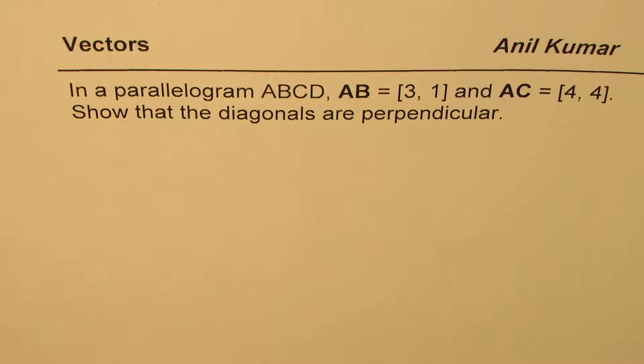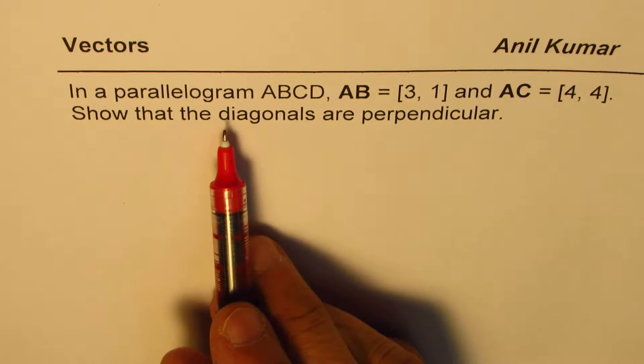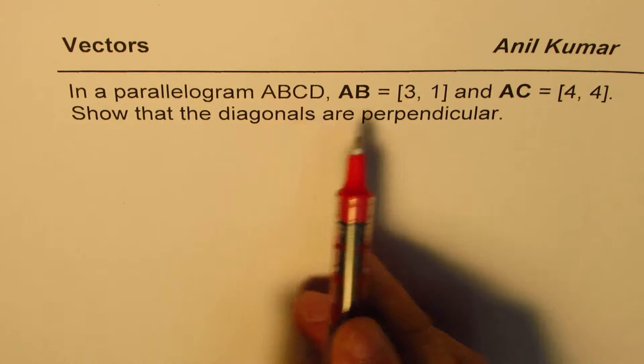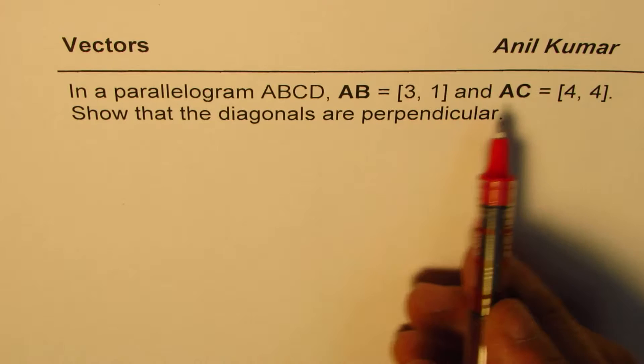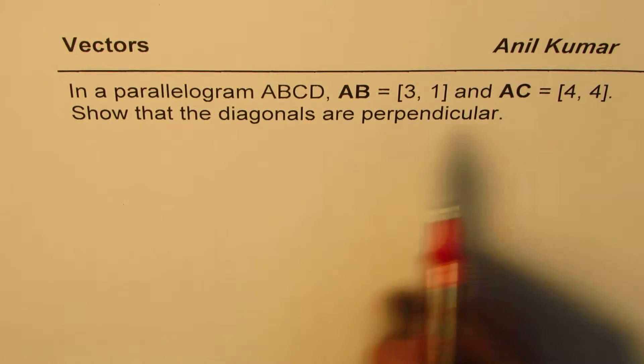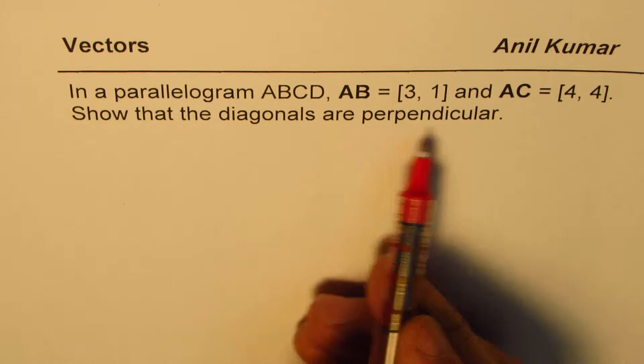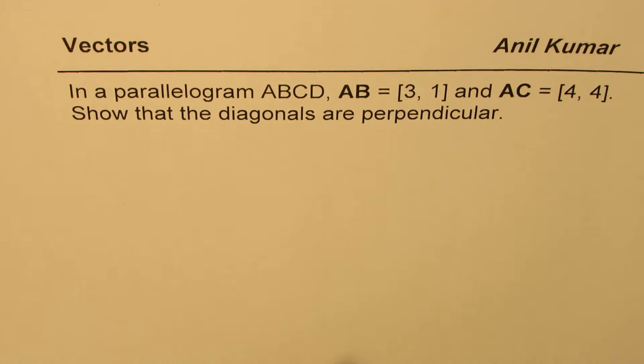The question here is: in a parallelogram ABCD, AB is equals to [3,1] and AC is [4,4]. Show that the diagonals are perpendicular. So that's the question for you.